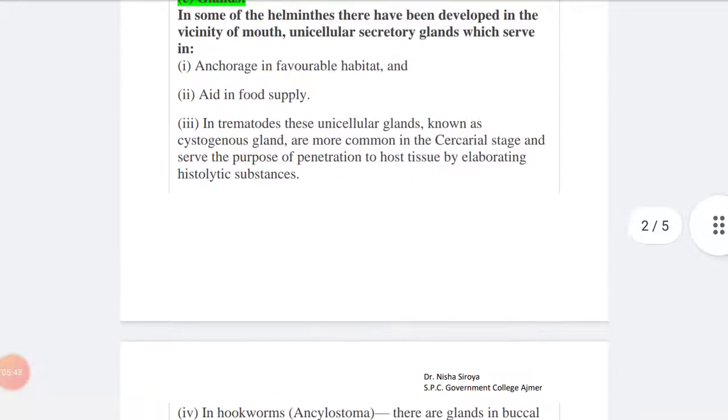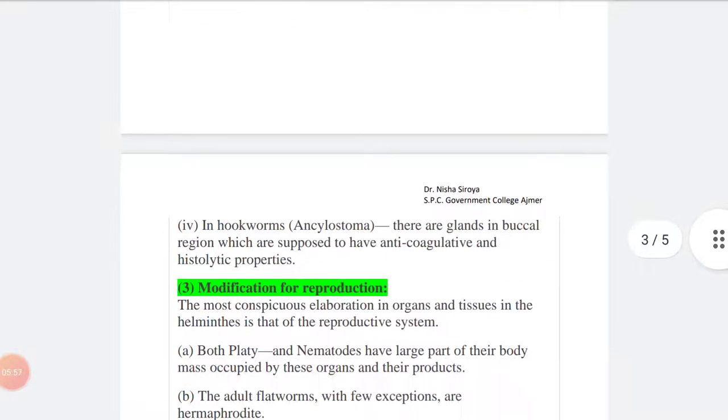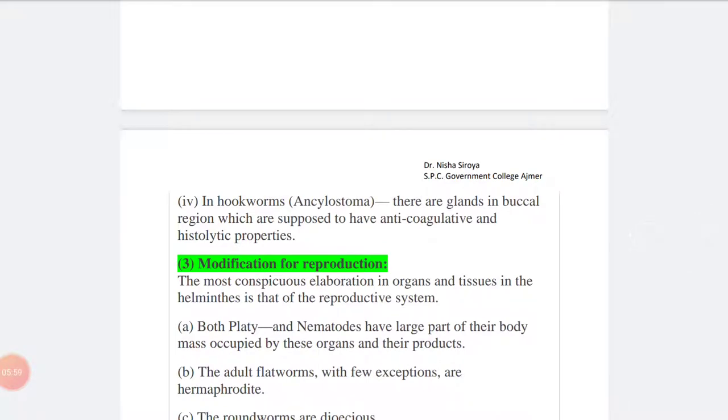In this way, these glands function for attachment as well as food supply. In hookworms like Ancylostoma, there are glands in buccal region which are supposed to have anticoagulative and histolytic properties. Anticoagulative properties may help to prevent the thickening of the blood.